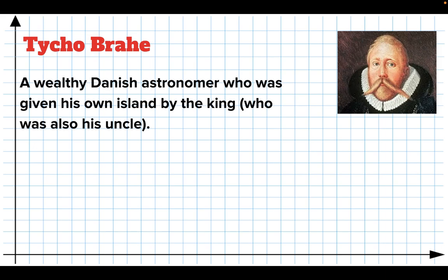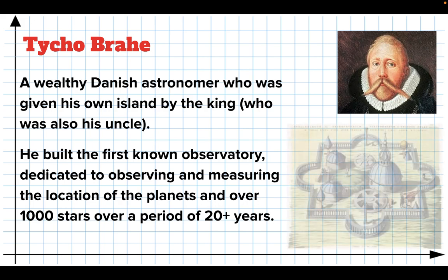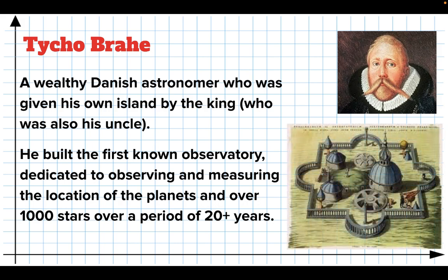Then the next guy in our story is a guy named Tycho Brahe. He's very rich. His uncle owns an island. And he built the first known observatory that was dedicated to measuring the location of planets. For 20 years, every night that it wasn't cloudy, he mapped over 1,000 stars and every planet, their locations, all through the night. So he had this vast treasure trove of data. And it was very carefully measured and recorded.